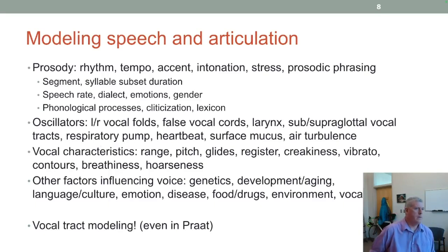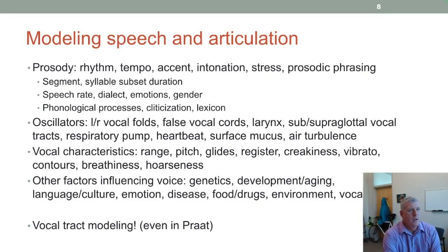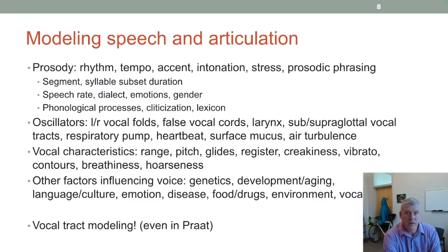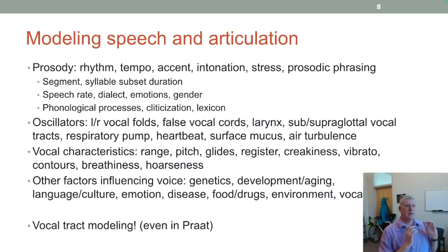There are quite a few different things that go into TTS systems — trying to model the vocal folds and respiration. Vocal characteristics include different ranges, different fundamental frequencies, creakiness, vibrato, and breathiness. Other factors affecting how a human voice sounds include genetics, aging (the voice changes with age), language and culture, emotion, and diseases. All sorts of things can go into trying to create a computer system that sounds like a human.